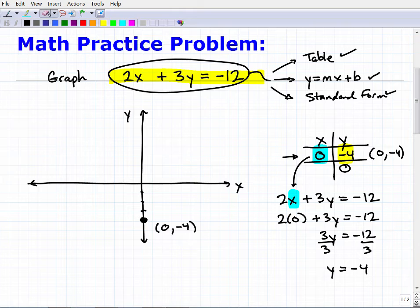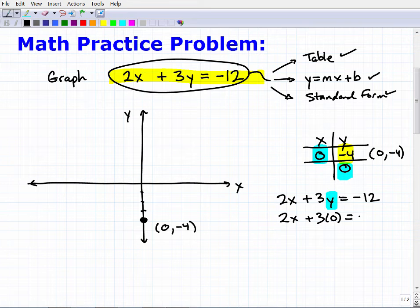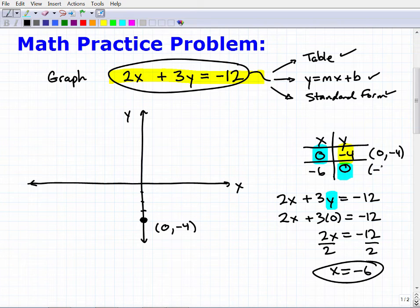Okay, so that's how we got one point, and we're basically going to do the same thing, but this time we're going to let y be equal to zero, and we're going to solve for x. So this is going to be 2x plus 3 times zero equals negative 12. So 3 times zero is zero, right? So that goes away. So we have 2x equals negative 12. Now I'm going to divide both sides of the equation by two, so x equals negative six.